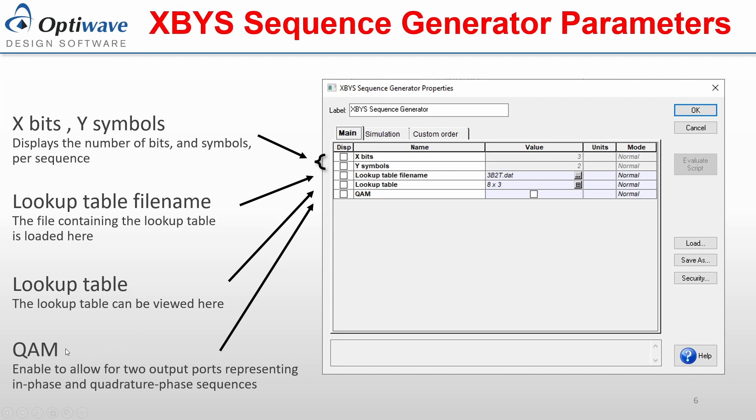The parameter QAM can be enabled to allow two output ports to be used instead of one, to align with two-dimensional coding formats.